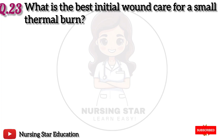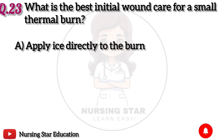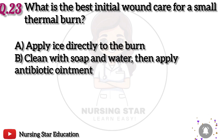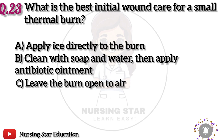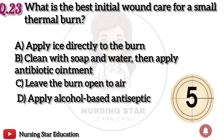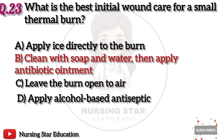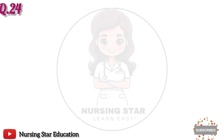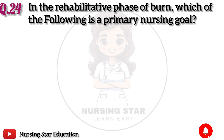Question 23: What is the best initial wound care for a small thermal burn? Option A: Apply ice directly to the burn. B: Clean with soap and water, then apply antibiotic ointment. C: Apply alcohol-based antiseptic. The correct answer is B: Clean with soap and water, then apply antibiotic ointment.